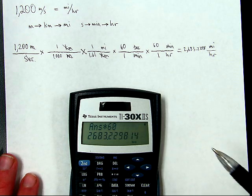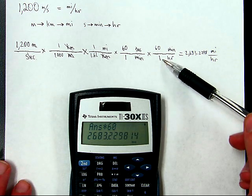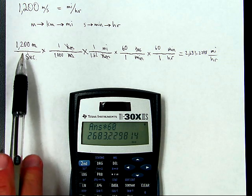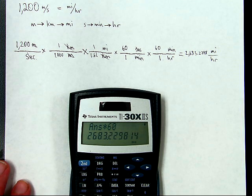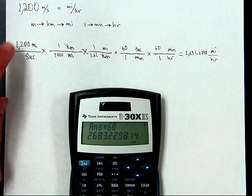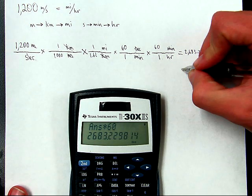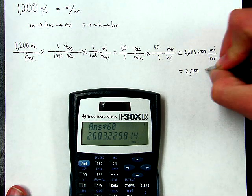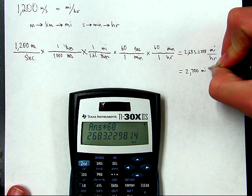Obviously that's not the final answer yet. I need to round for correct significant figures. This is infinity, this is infinity, this is three, this is infinity, and this is only two significant figures here. So I'm going to find that I'm going to need to round it to two significant figures on account of this number I started with. So the final rounded answer is 2,700 miles per hour.